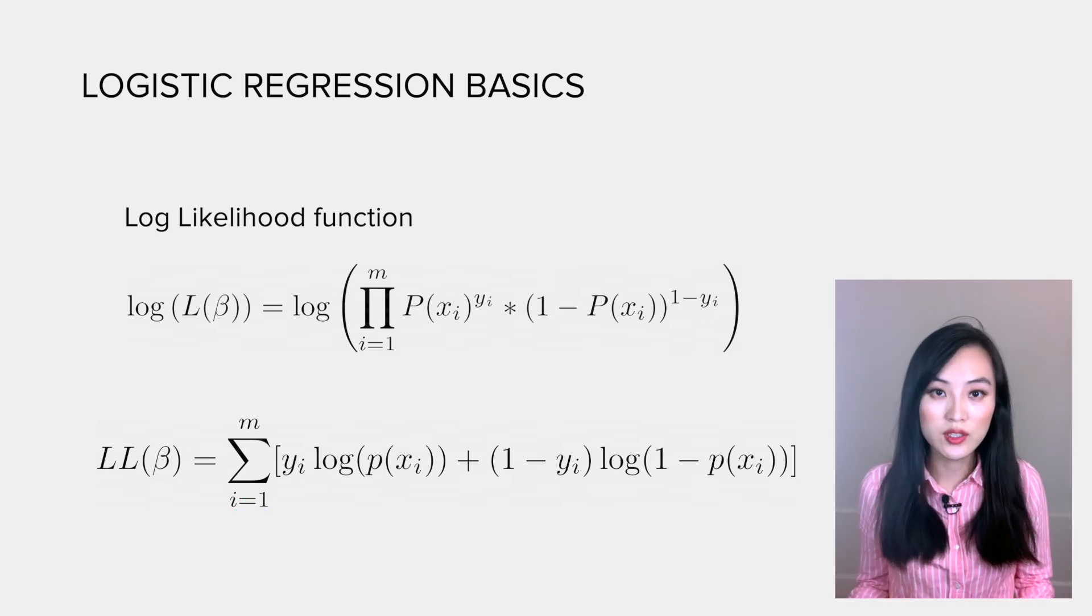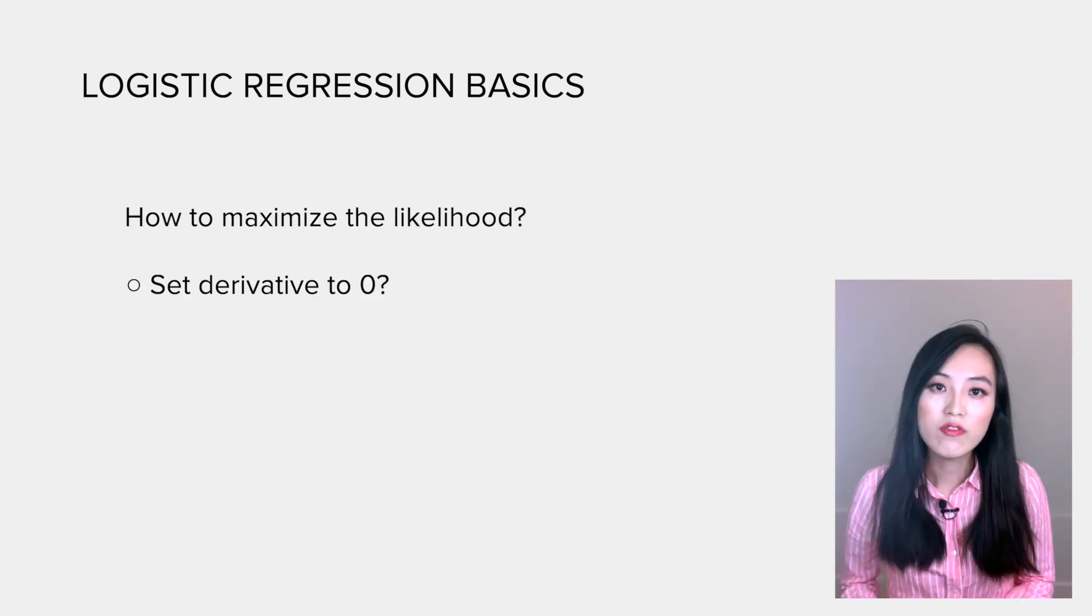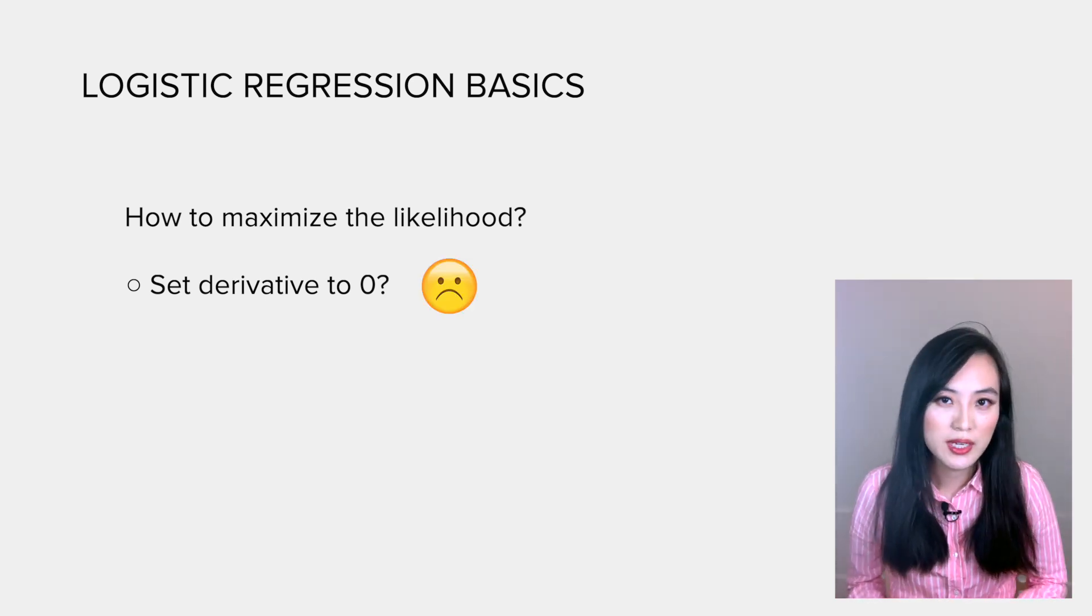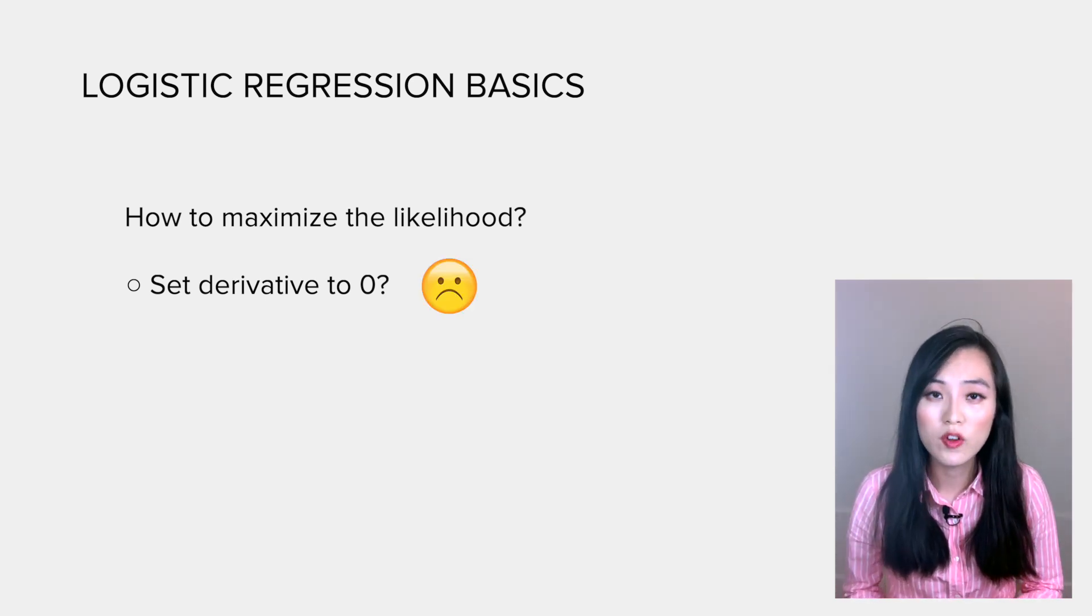Now that we have a function for log likelihood, we simply need to choose the values of beta to maximize it. Unfortunately, if we try to set the derivative equal to zero, we'll get frustrated because there's no closed form for the maximum.